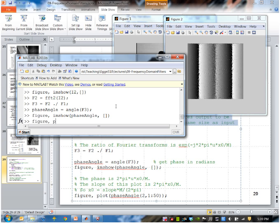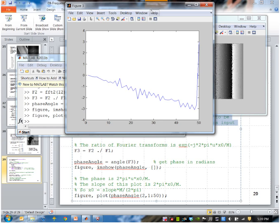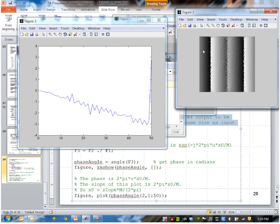I'll say plot phase angle, and let's say just for the first 50 columns. What we're seeing here is just the first 50 columns of this. You can see the slope has this negative value. Looks like it's about minus 3 over 50 is the slope.